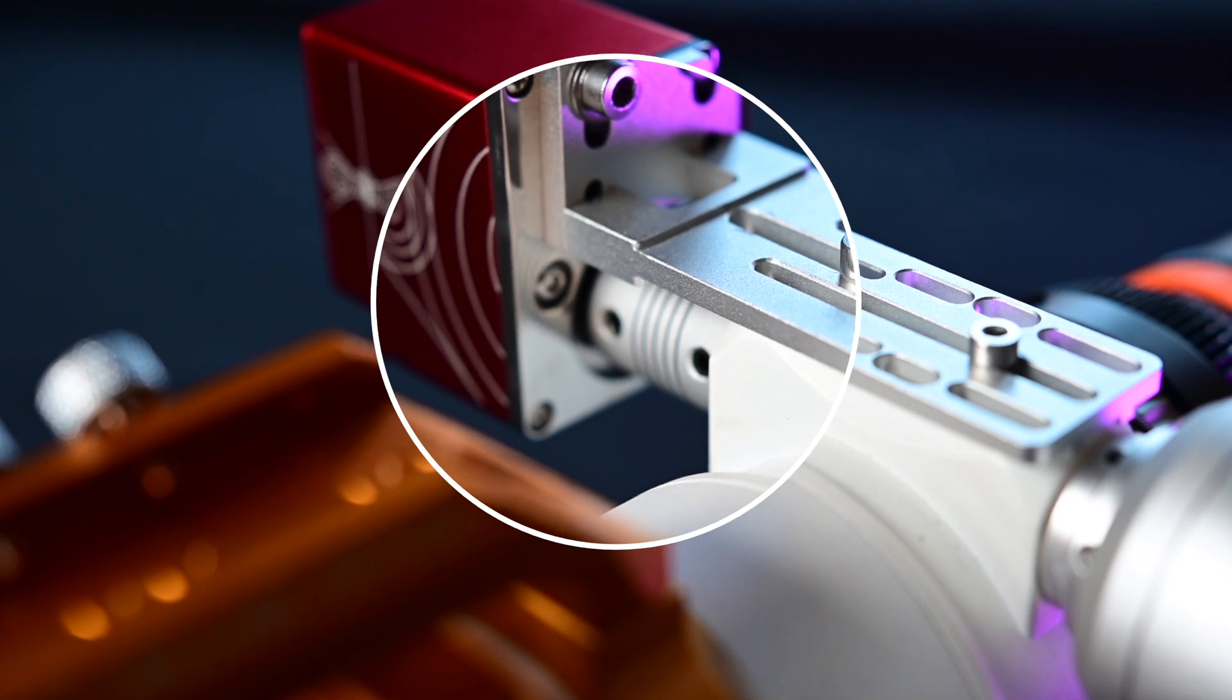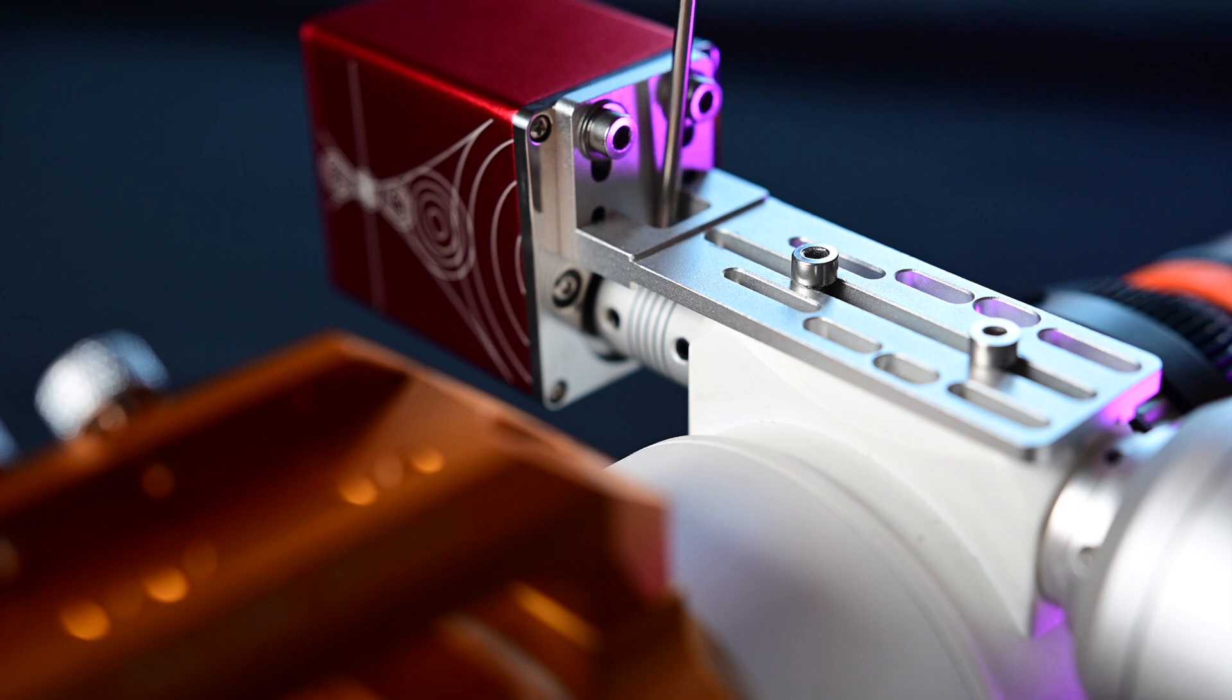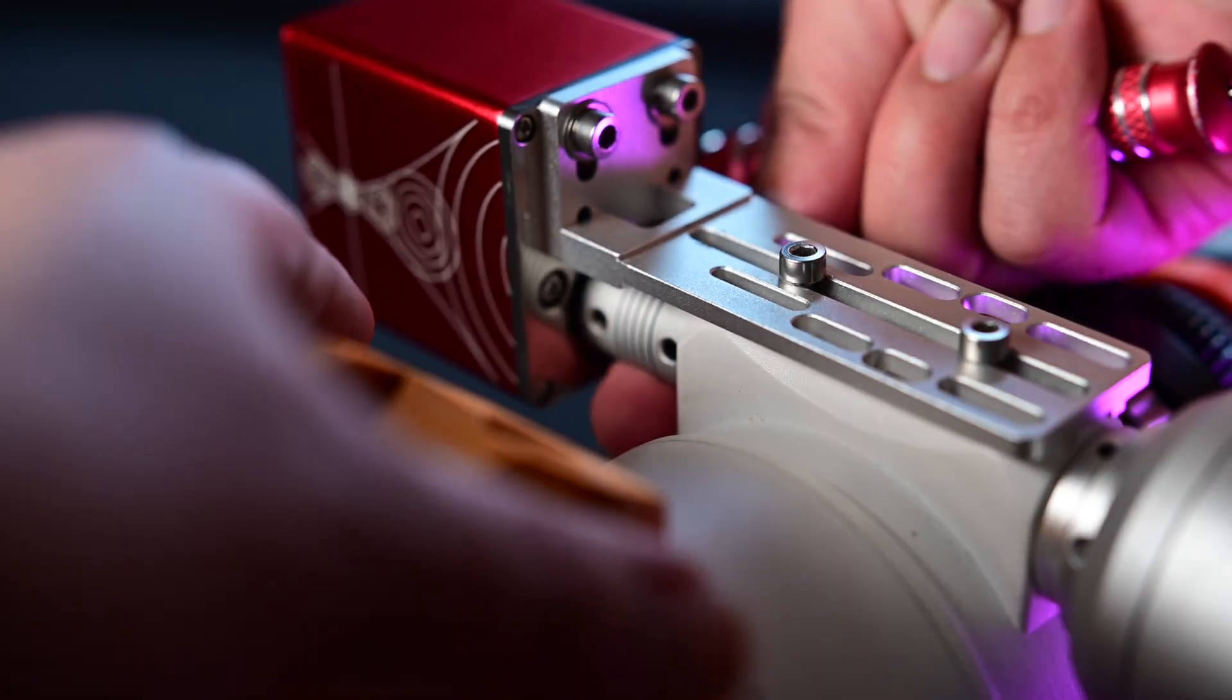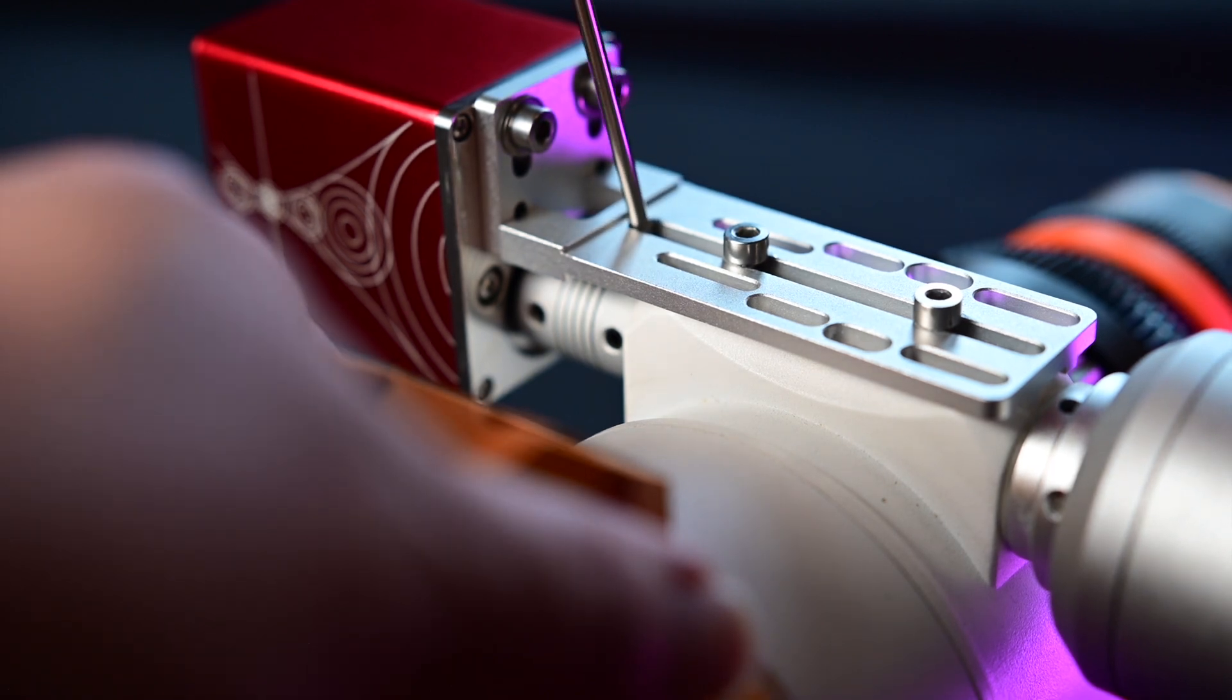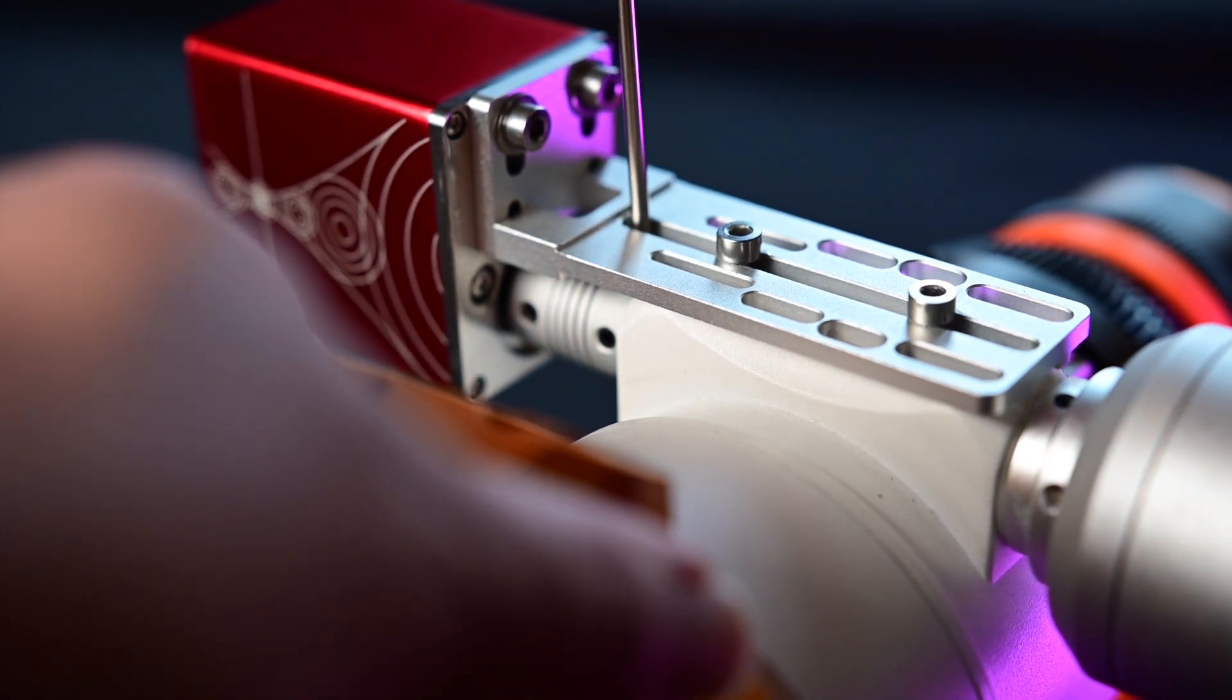This is where you want to make sure that you can see the grub screws that are installed on the coupler. You can get to them with a tool from the top and from the side. Adjust the coupler so that you can then tighten all four of the grub screws on the coupler so that the coupler is secure on the telescopes focusing shaft.